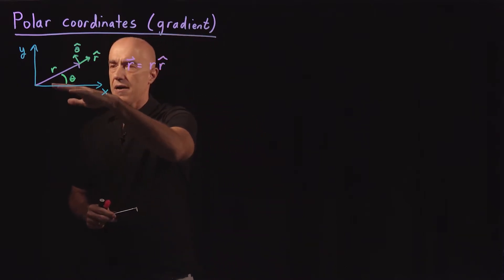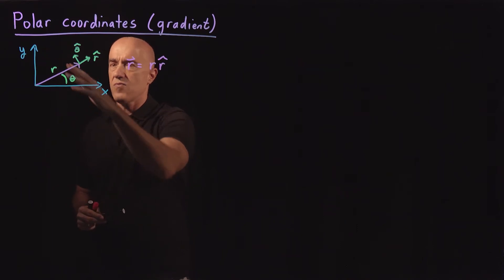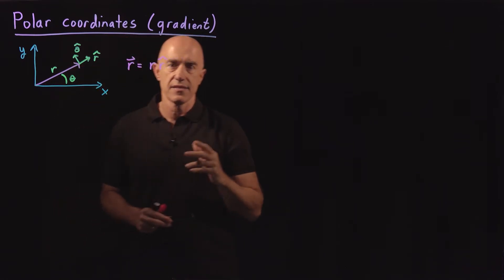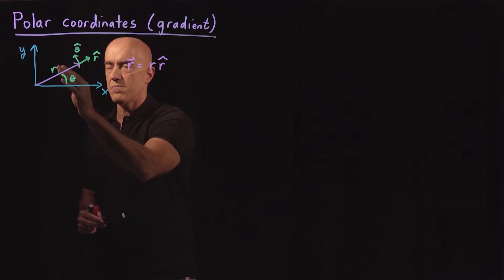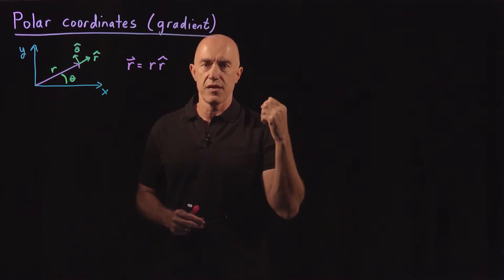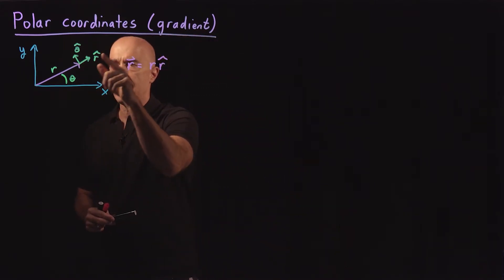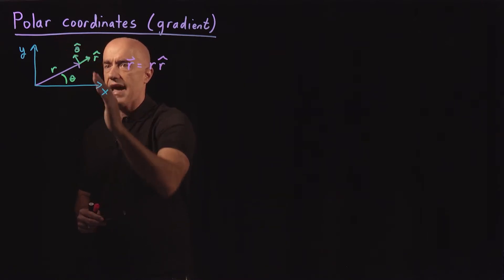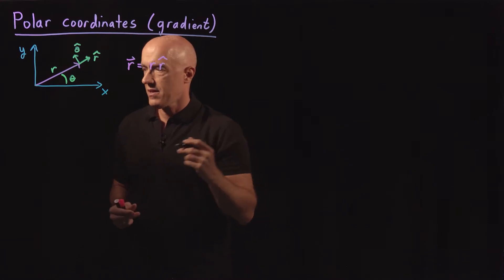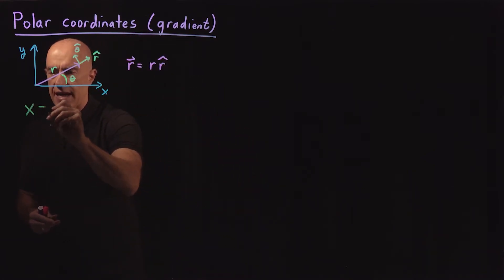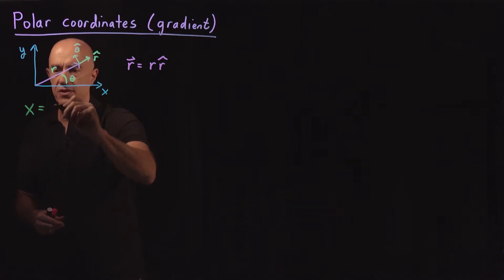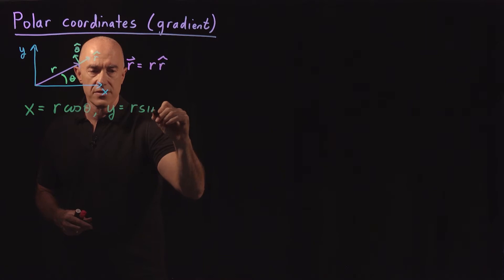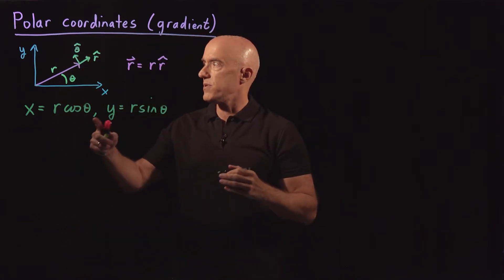Polar coordinates uses r and theta instead of x and y. If we have our vector r, then the angle it makes with the x-axis is denoted by theta, and the length of the vector is denoted by r. We have unit vectors associated with polar coordinates: r-hat in the direction of increasing r, and theta-hat in the direction of increasing angle. Polar coordinates are defined as: x equals r cosine theta, and y equals r sine theta. Most of you are probably familiar with this.